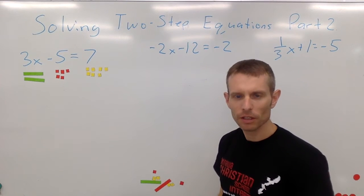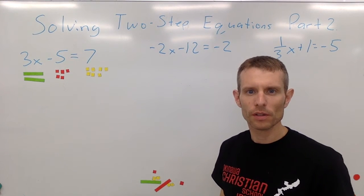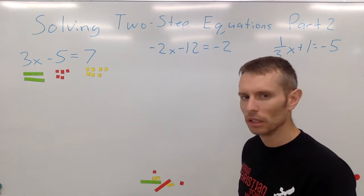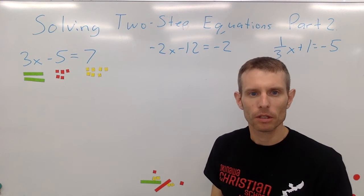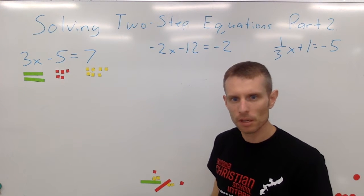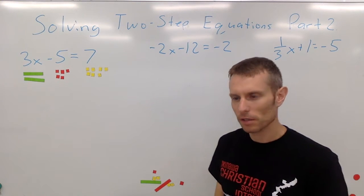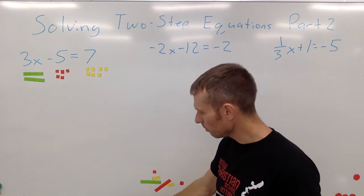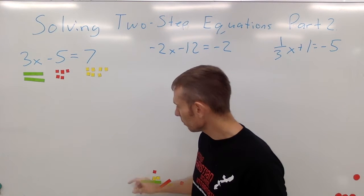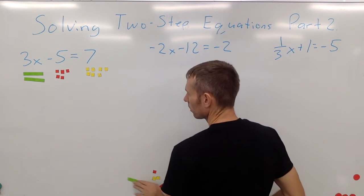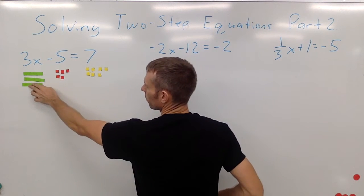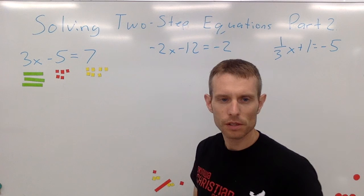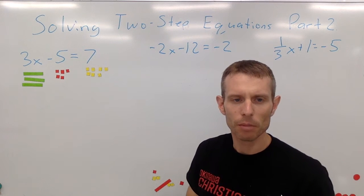Okay, in this video — this is part two of solving two-step equations — and we're going to go through a few examples. I hope you find this helpful. To begin with, we have 3x minus 5 equals 7.